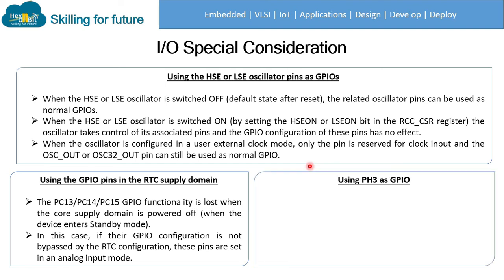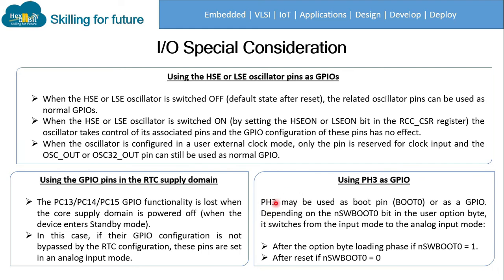If there is a GPIO configuration and RTC configuration is not bypassed, these pins are set in analog input mode. And at last, using PH3 as GPIO: this pin can be used as a boot pin or as a GPIO depending on the software boot zero bit in the user option byte. If boot zero equals one, the option byte will be in the loading phase state; if zero, it will be in reset state.